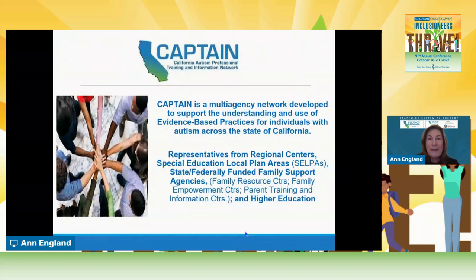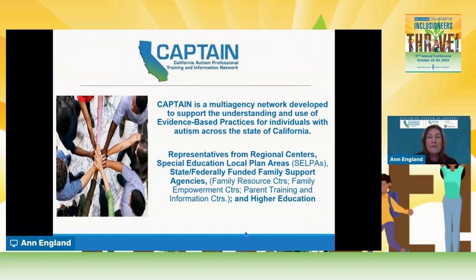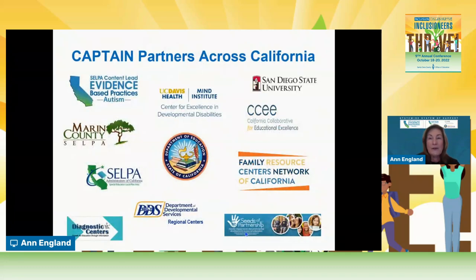I am the co-coordinator of CAPTAIN. For those who don't know who we are, we're a multi-agency network that has been around for quite a while—I think we're on our tenth year. We came out of the Legislative Blue Ribbon Commission report in 2007. We are unique in that we're a multi-agency entity with membership from regional center individuals, special education local plan areas, our SELPAs and schools, state and federally funded family support entities, and higher education. These are all of our partners across California, because there are many individuals, service providers, and families who interface with individuals with autism, and it's important that we're all on the same page.